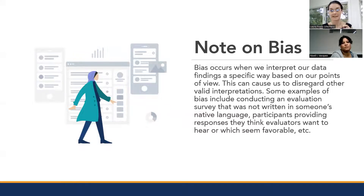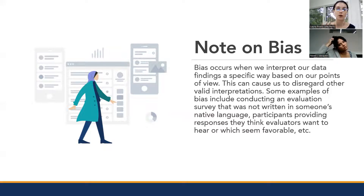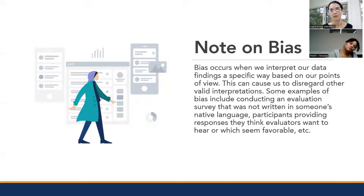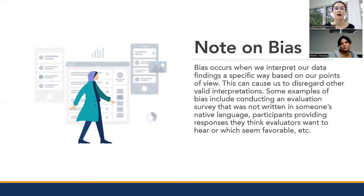A note on bias: there is a question in our score form related to bias. What we mean by bias is not just statistical bias or bias in evaluation. Bias occurs when we interpret our data findings in a specific way based on our points of view, causing us to disregard other valid interpretations. Examples include conducting an evaluation survey not written in someone's native language, or participants providing responses they think evaluators want to hear. Bias can also happen in how you're implementing your practice, not just in evaluation.